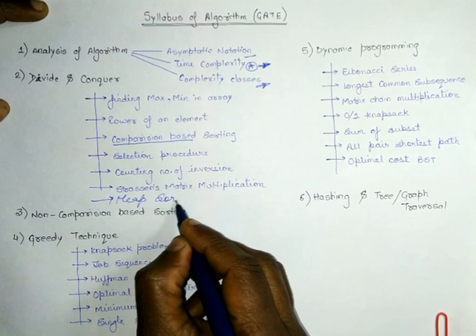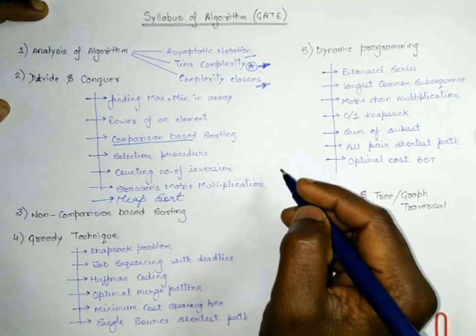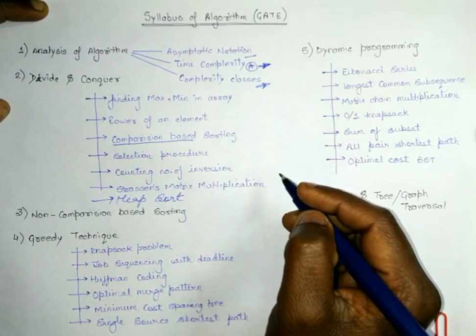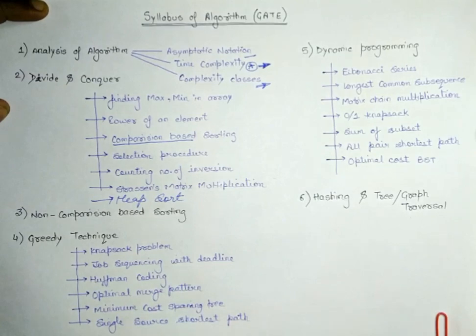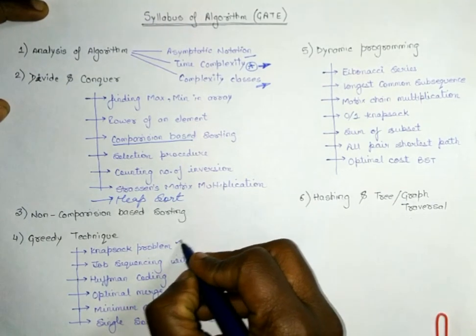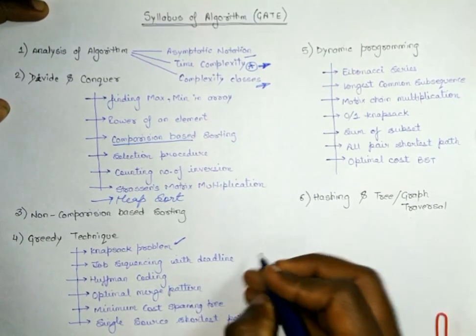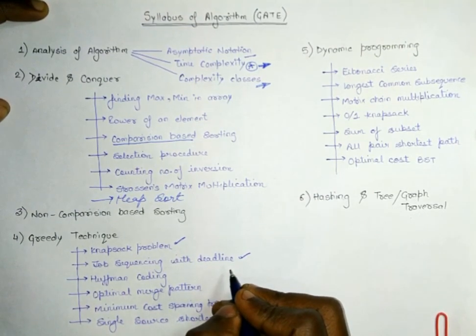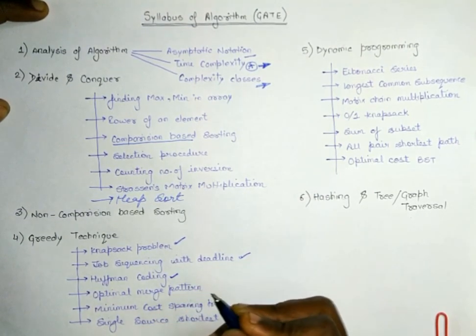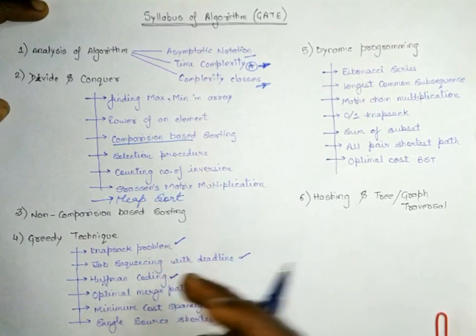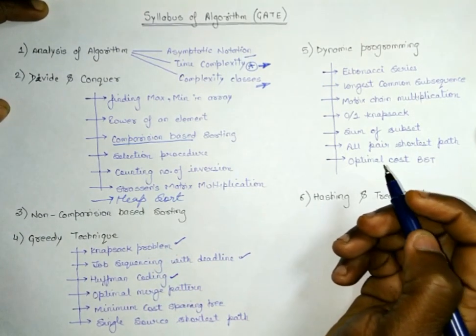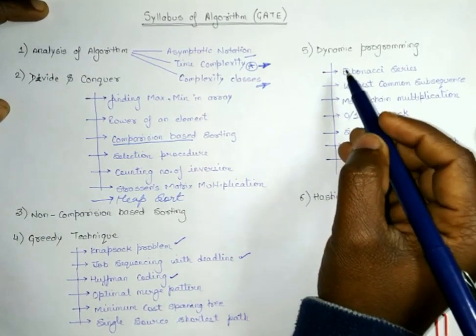After that comes greedy technique. In greedy technique, knapsack problem is one of the important things. Job sequencing is also important, and Huffman coding is also important. These three are the important points in greedy technique.